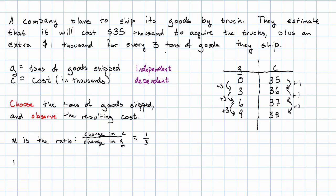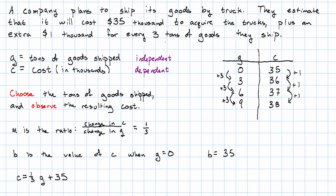What about the number b? That's the value of the dependent variable when the independent variable is 0. So in this case, the number b is 35. Our equation should be cost is 1 third times the tons of goods plus 35.